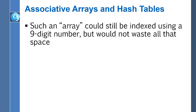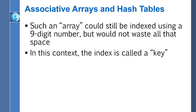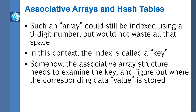You would index into this associative array using a nine-digit number, behaving as a programmer as if you were using a ridiculously large array of one billion student records. The index is referred to as a key — the student ID number is a key — and whatever you're looking up is the value associated with that key. In this example, the student ID number is the key and the value is the corresponding student record object.